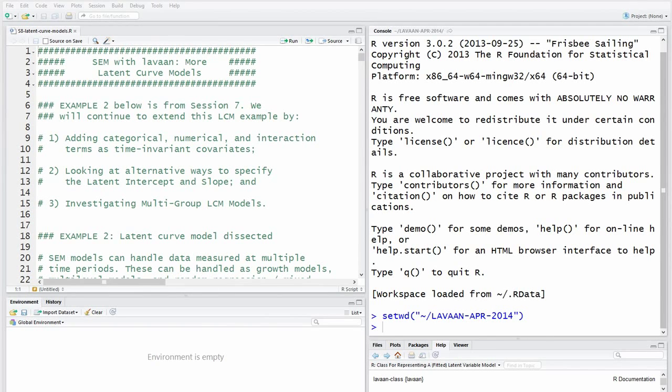Today we're going to continue with latent curve models. We're going to extend the example that we looked at last time in a number of ways. We're going to look at adding covariates to the model, covariates that can explain changes in the latent intercept and slope.